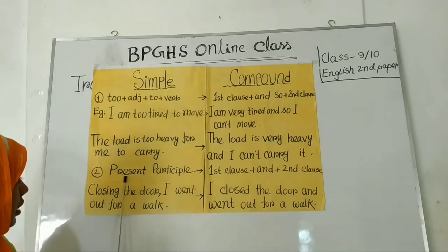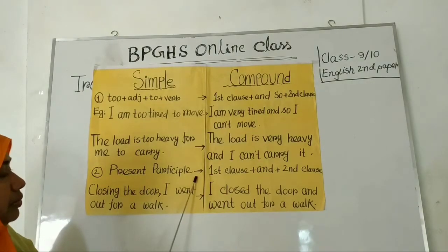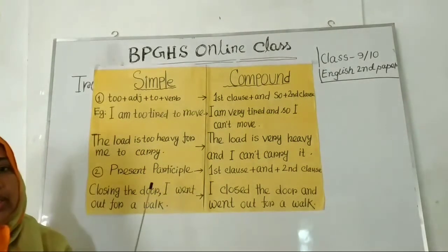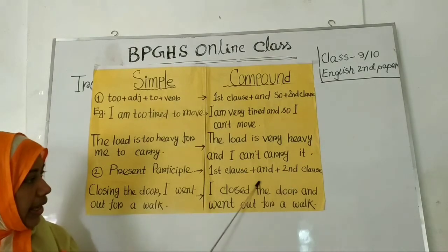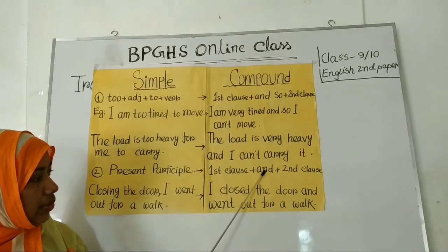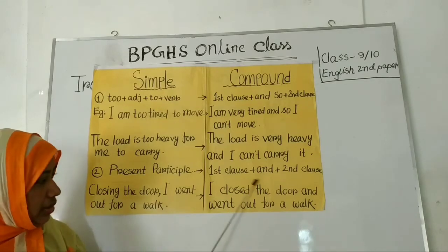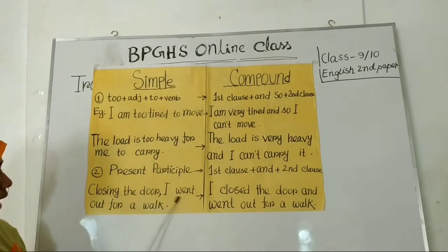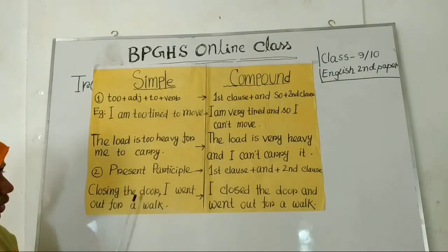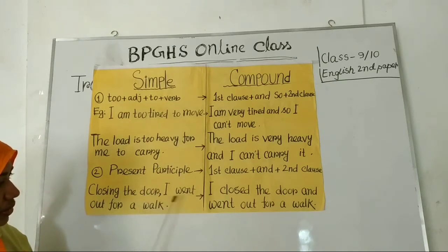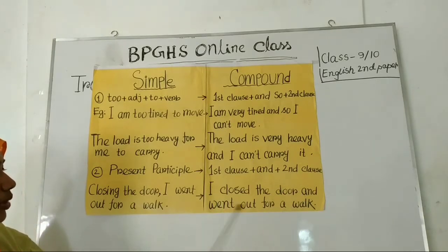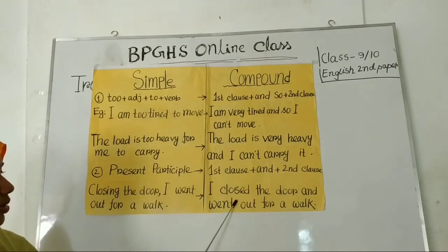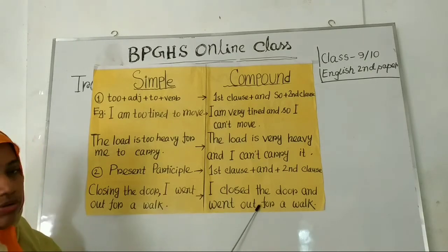Next, rule number two: present participle. If you get present participle — that means verb plus -ing — in a simple sentence, you will have to make two clauses and connect them with the coordinating conjunction and. For example: 'Closing the door, I went out for a walk.' This phrase is turned into a clause: 'I closed the door.' Then add and: 'I closed the door and went out for a walk.'